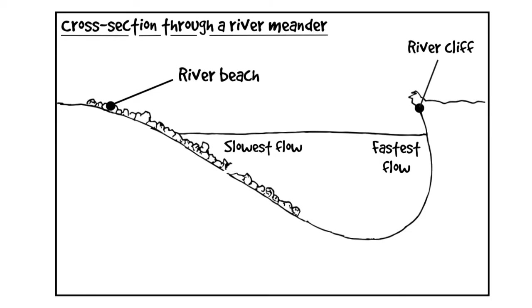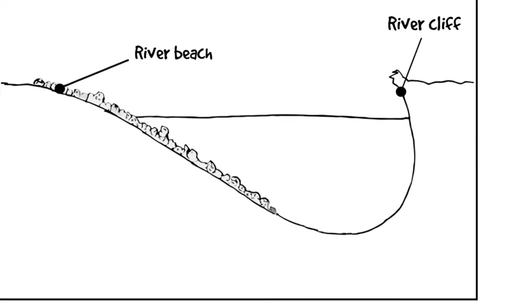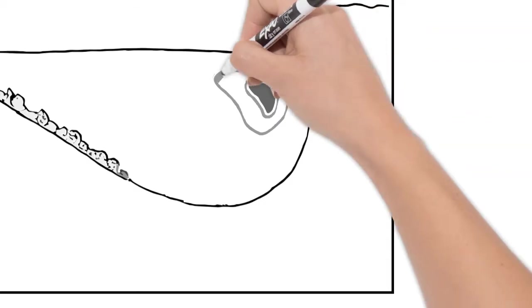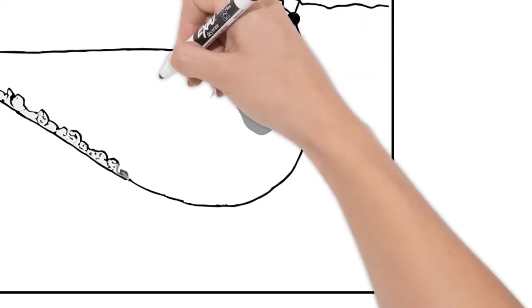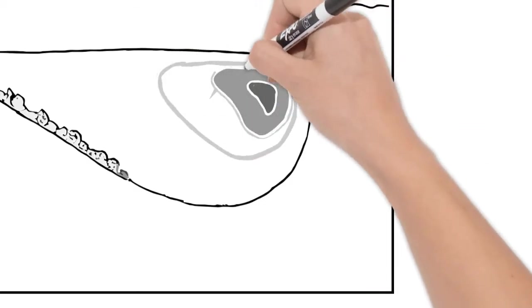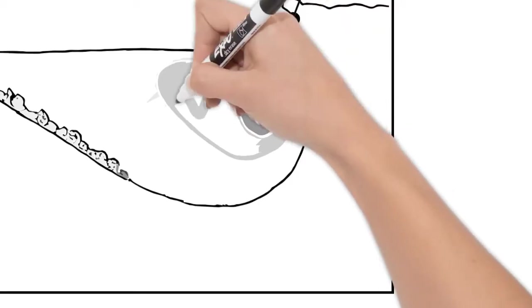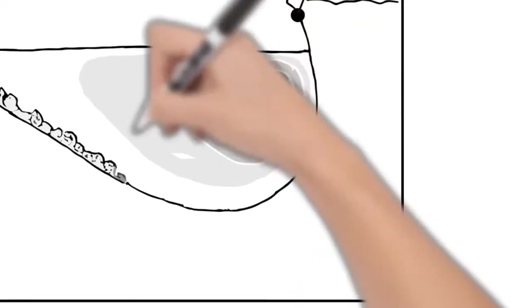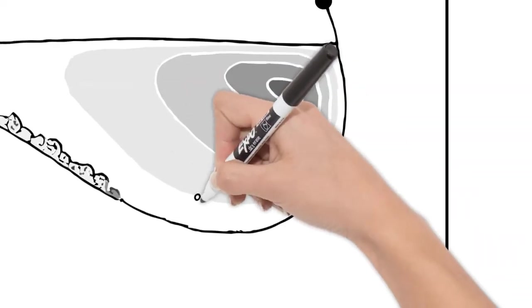We can add some extra information if we want to make the diagram more informative. So let's remove some of those labels and add some more information. We can show the speed of the water or velocity of the water using ISO lines, lines connecting areas of equal velocity. If we shade them in we can see how on the outside of the meander the river is flowing much faster than on the inside.